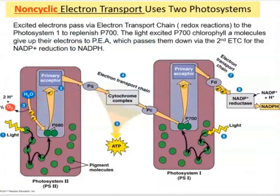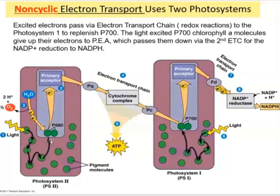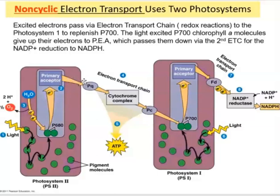Putting everything together: all of this happens within the thylakoid membrane. The protein complex is shown in purple and the pigment molecules like chlorophyll are visible. Light is absorbed and the energy passes from chlorophyll to chlorophyll until it reaches the reaction center. Water is split — electrons replenish those lost from the reaction center, oxygen diffuses out through the pores, and electrons begin the journey down the ETC through redox reactions.